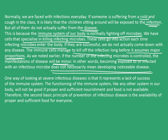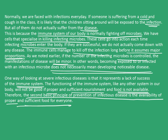One way of looking at severe infectious disease is that it represents a lack of success of the immune system. The person who gets infected has a weak immune system. The functioning of the immune system, like any other system in our body, will not be good if proper and sufficient nourishment is not available. Therefore, the second basic principle of prevention of infectious disease is the availability of proper and sufficient food for everyone.